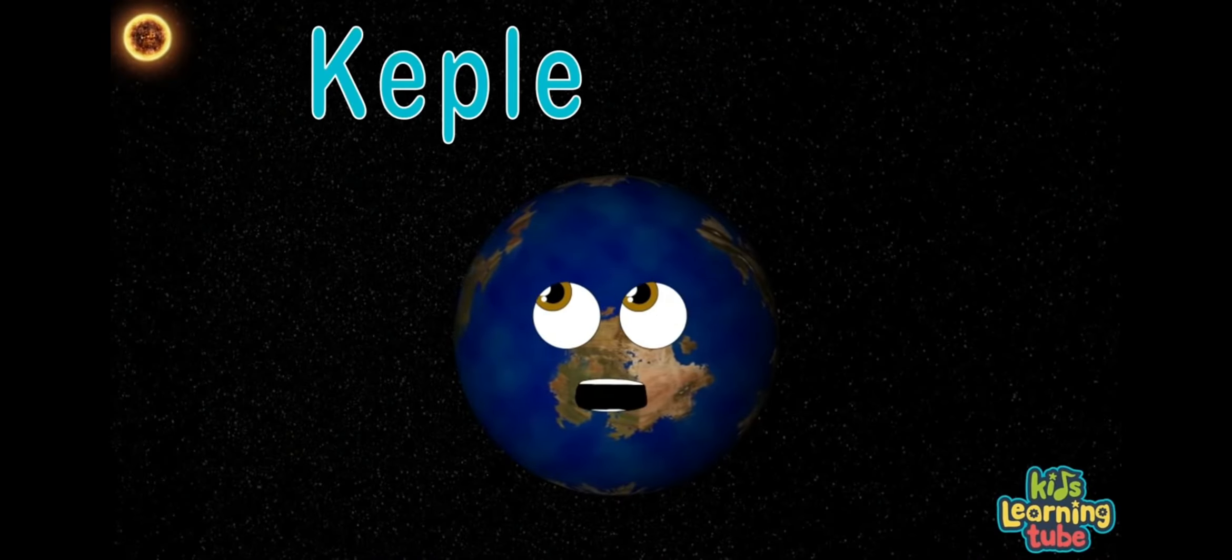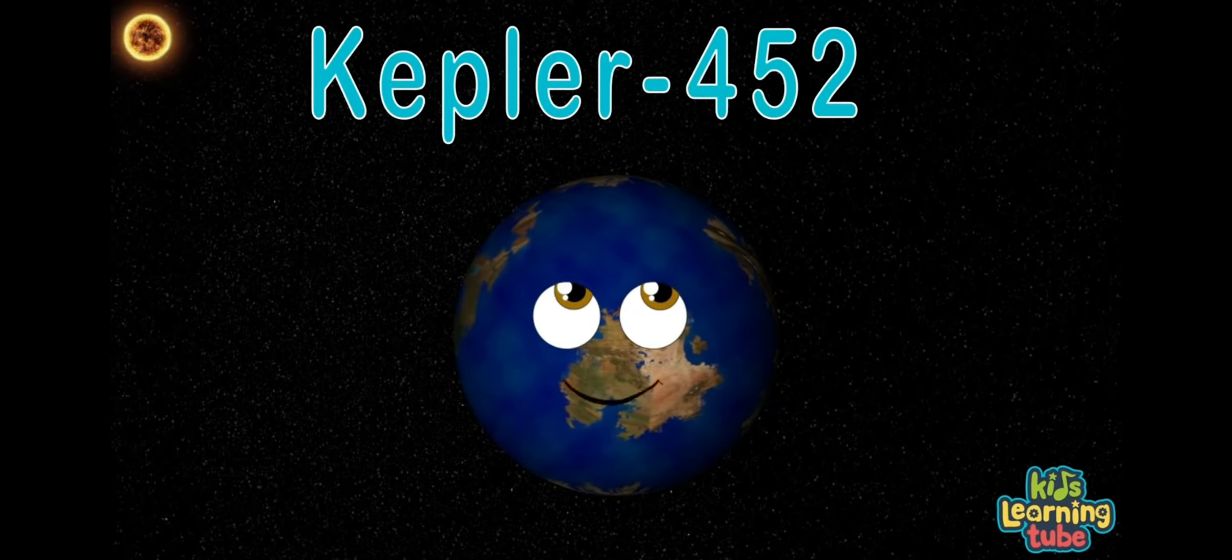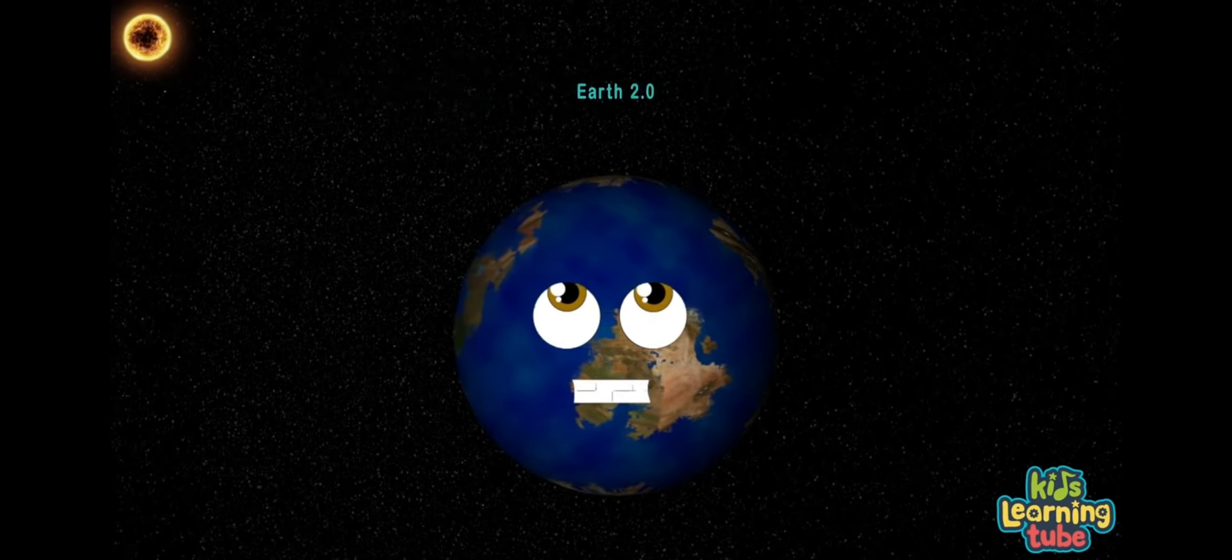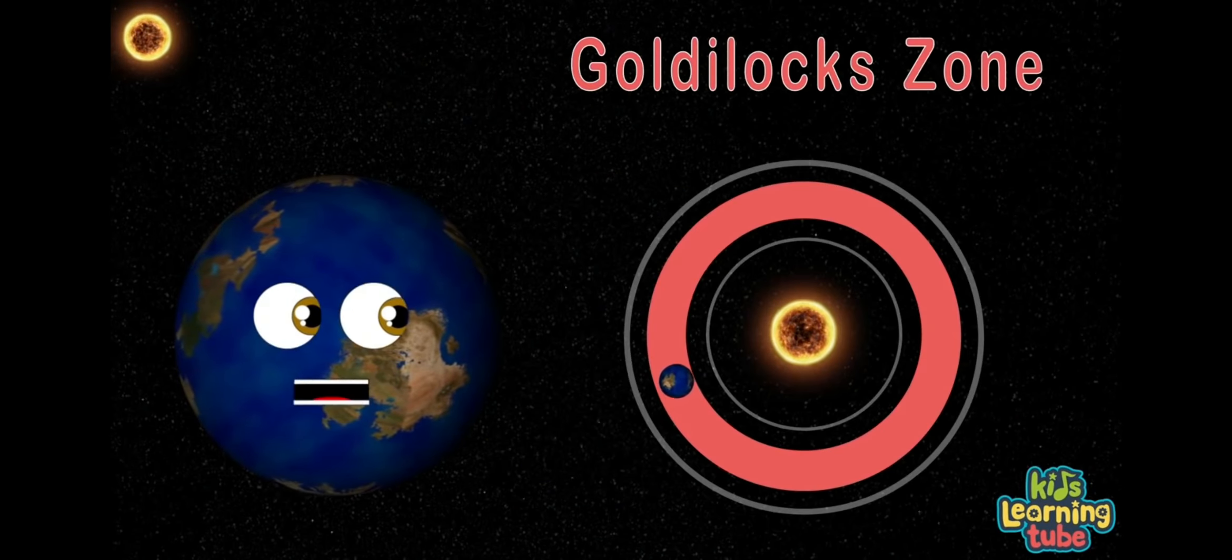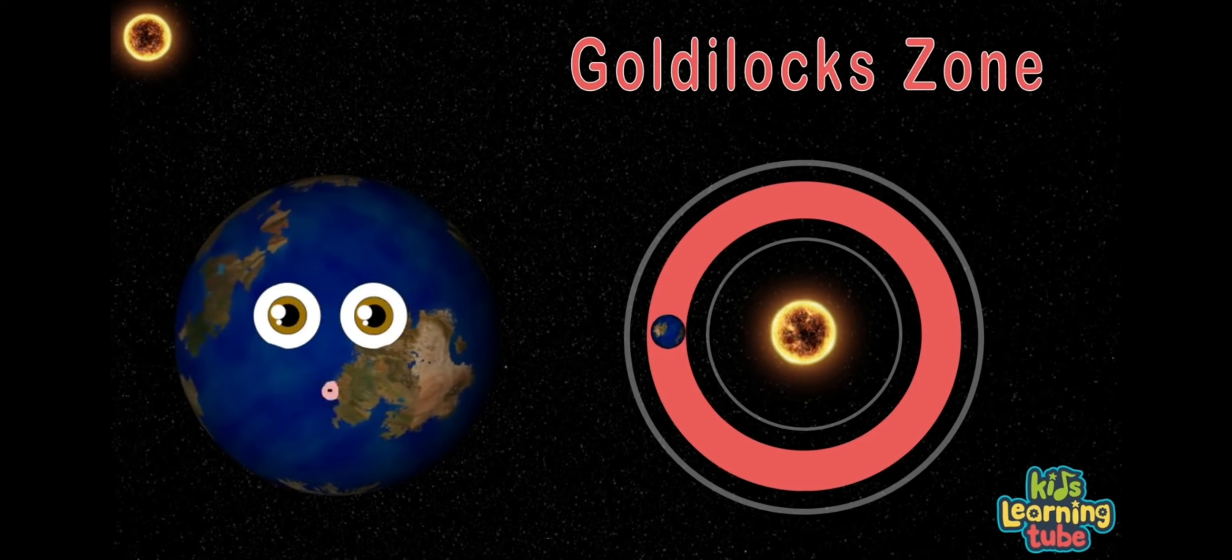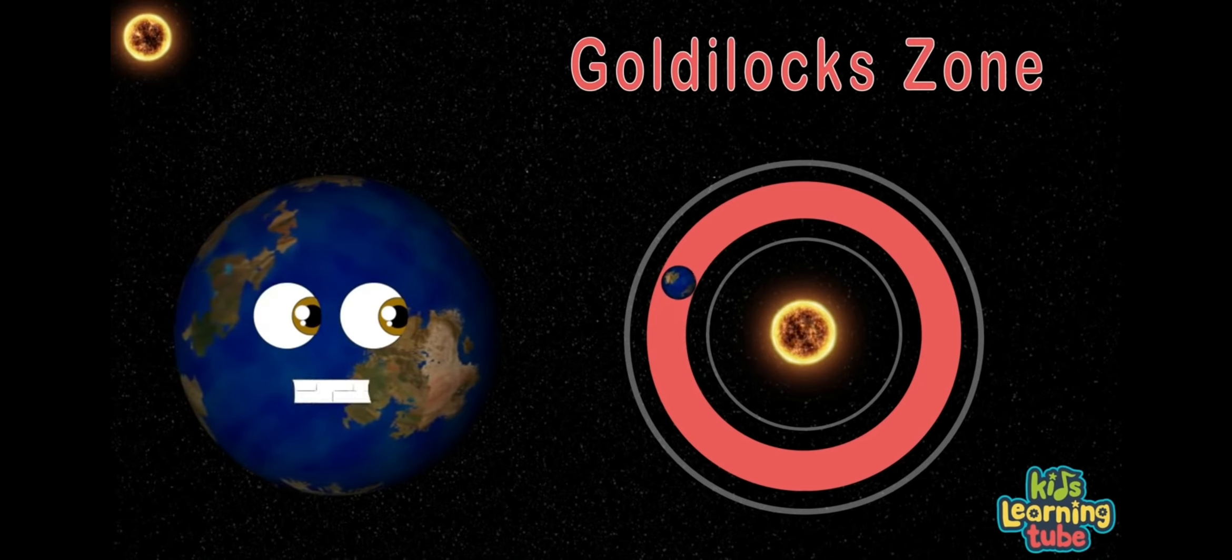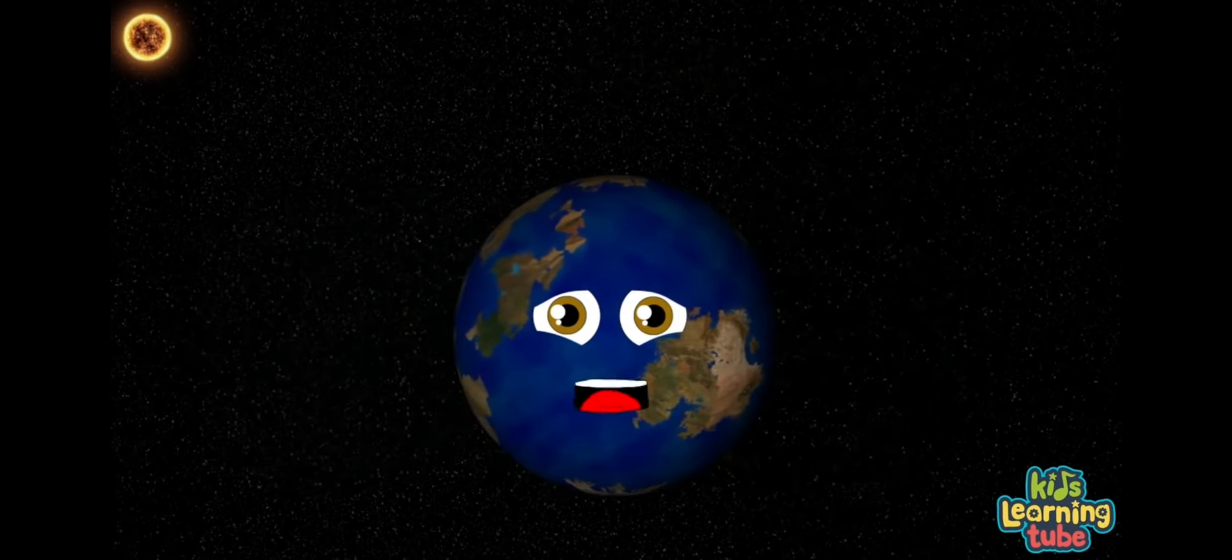My name is Kepler-452b, also known as Earth 2.0. Yeah, that's me. I may support life within the Goldilocks zone while orbiting a sunlight star like yours at home. Let's see.